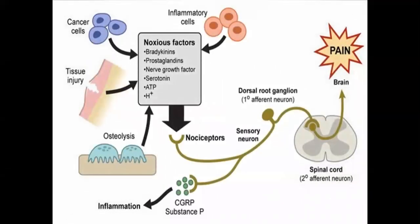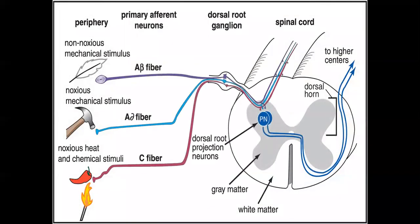Inflammatory cells due to injury, cancer cells, damaged tissues, or osteolysis and osteophyte formation produce noxious factors like bradykinin, prostaglandin, nerve growth factors, serotonin, ATP, and hydrogen ions. All these stimulate the nociceptors, and these sensory neurons go to the dorsal root ganglion, to the spinal cord, and then to the brain, where pain signals are perceived.